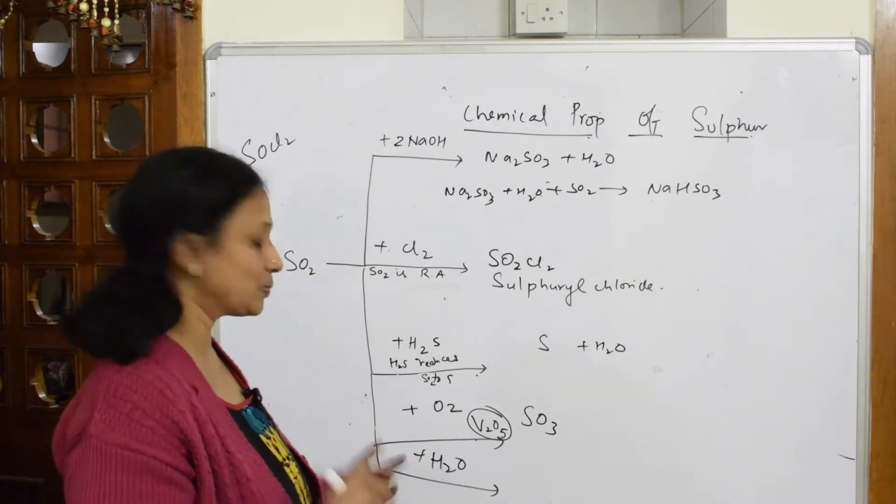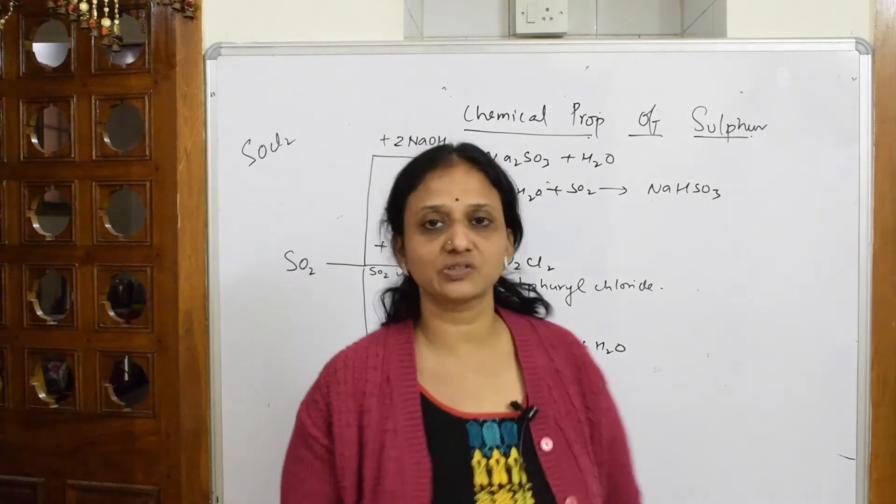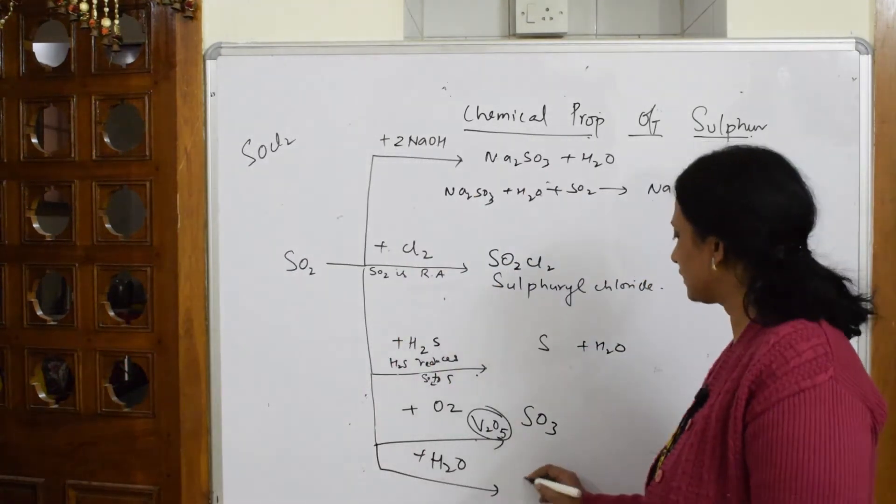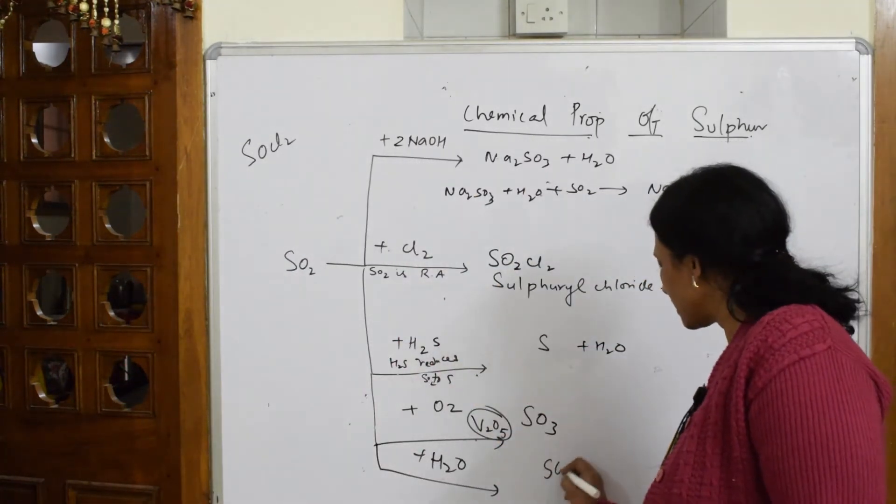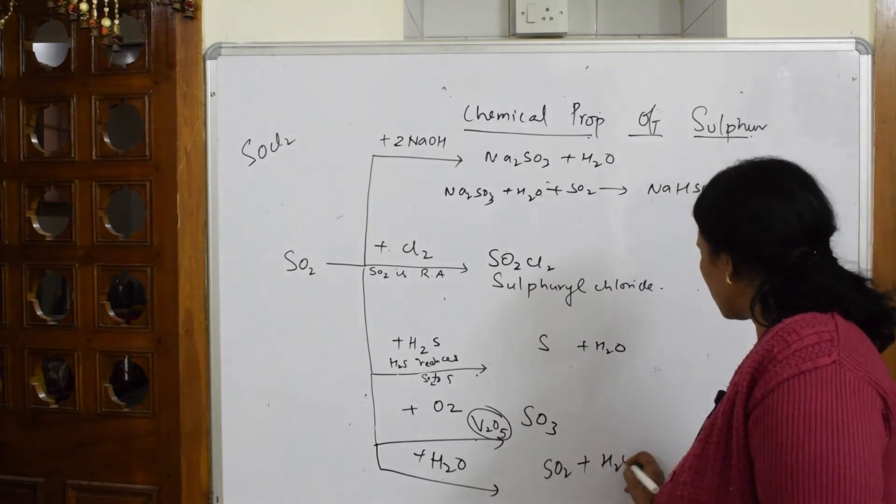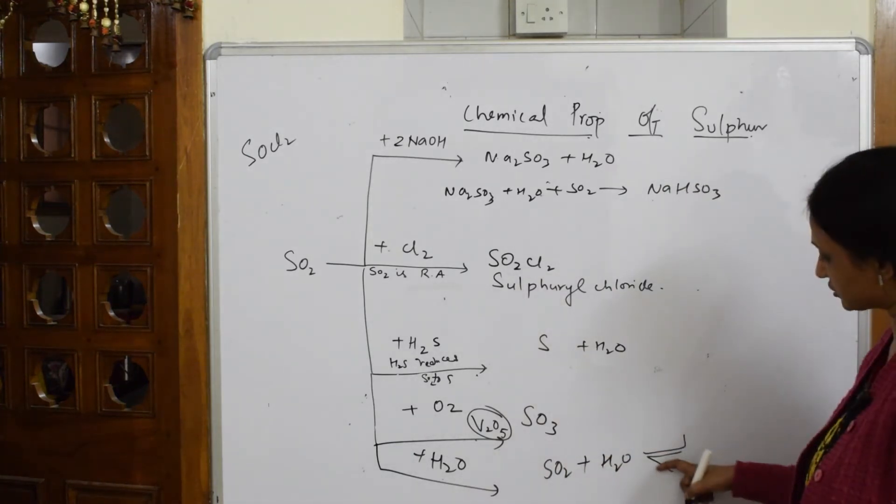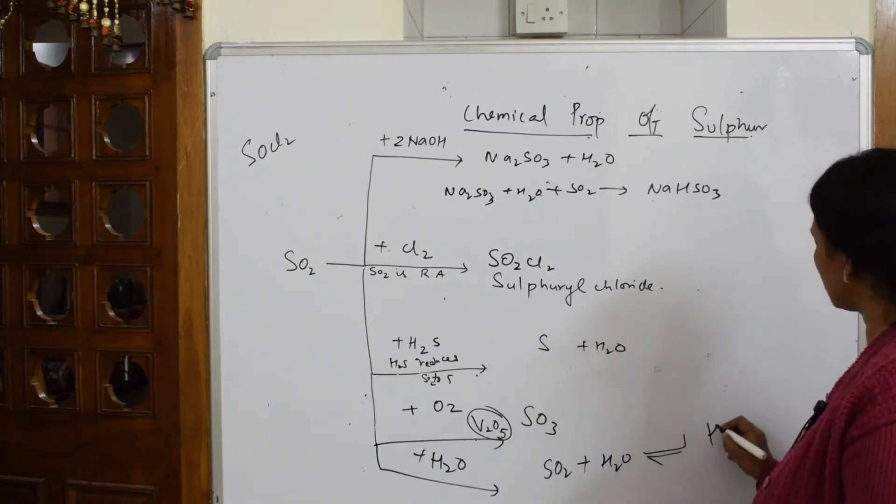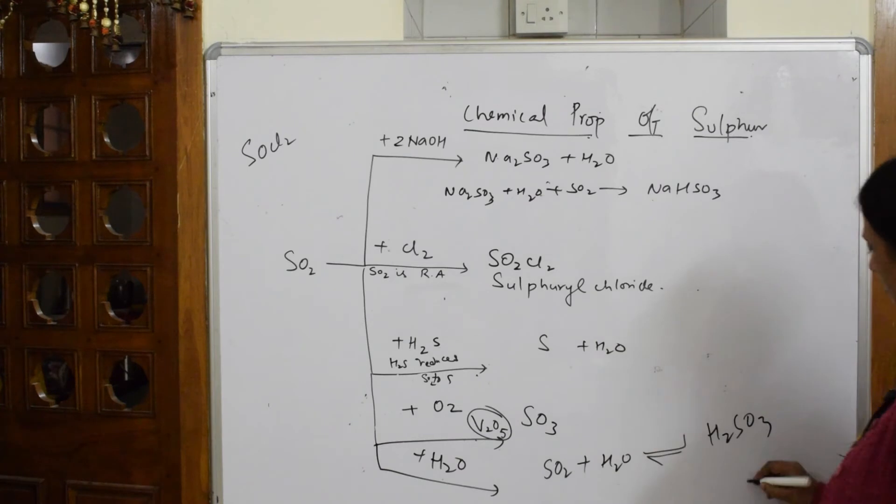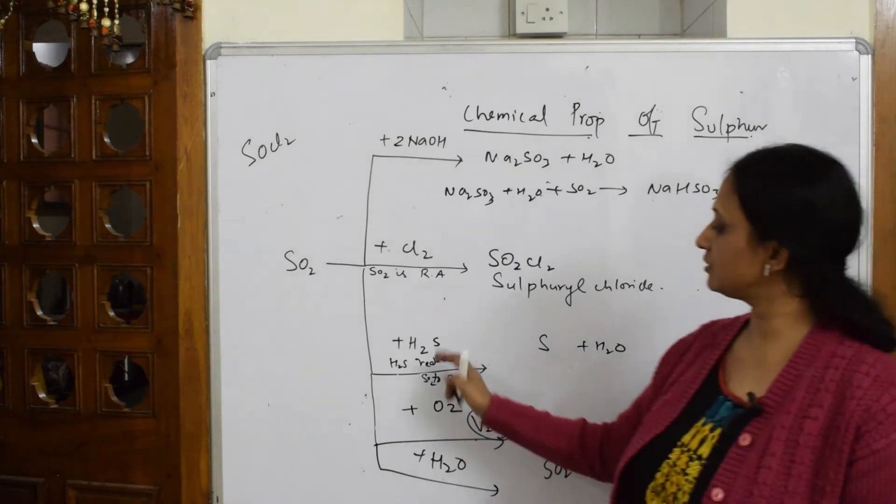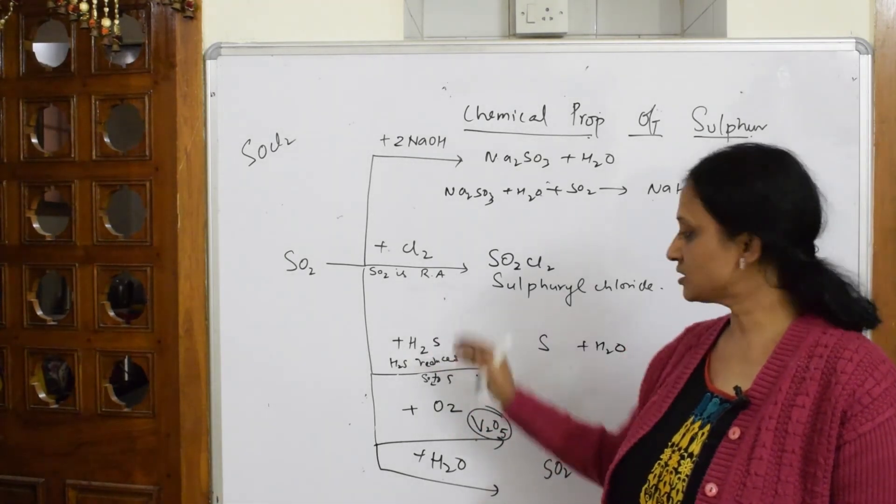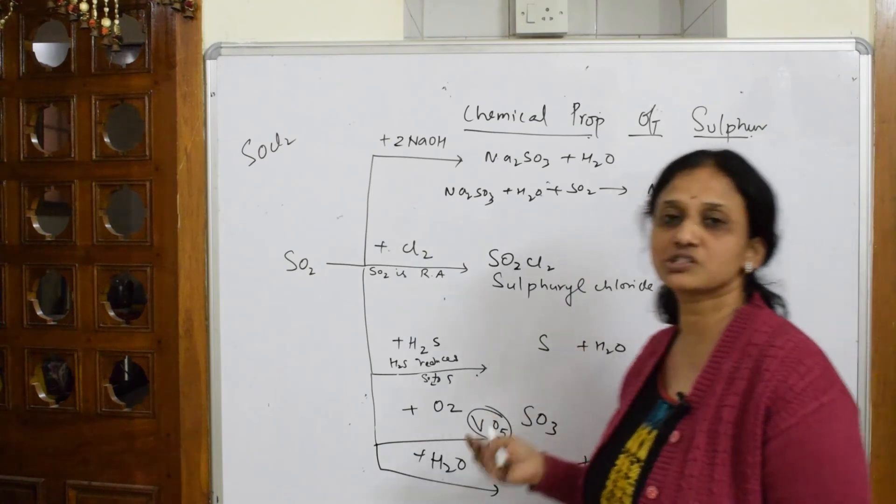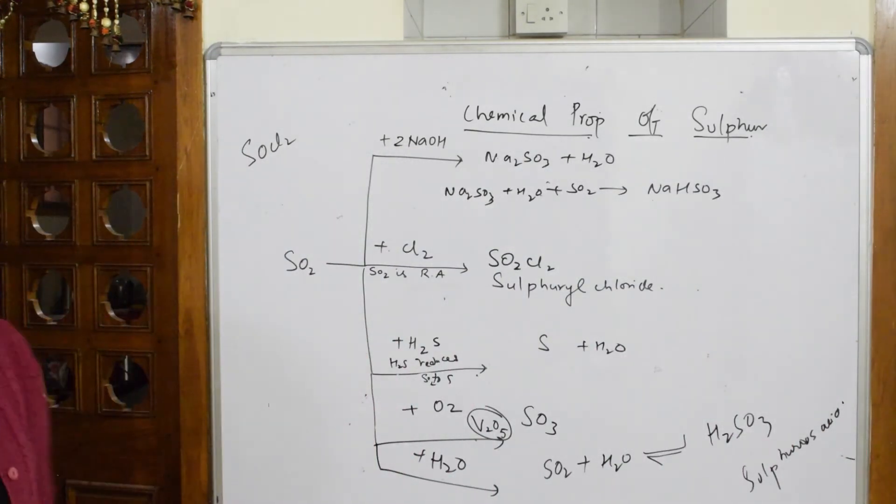And so when you take SO2 plus H2O, simple, it's going to form sulfurous acid. Both are in equilibrium. I'll write that reaction here: SO2 plus water molecule, you get an equilibrium reaction, and the product formed is H2SO3, sulfurous acid. Here observe carefully, it is acting as a reducing agent, and here it has lost the oxygen and it has got reduced.